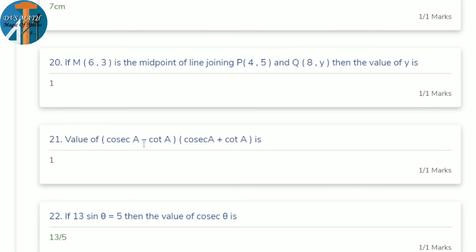20th question: M(6, 3) is the midpoint of line joining P(4, 5) and Q(8, y). Find y. Using midpoint formula for y: (y₁ + y₂)/2 = 3, so (5 + y)/2 = 3, giving 5 + y = 6, so y = 1.